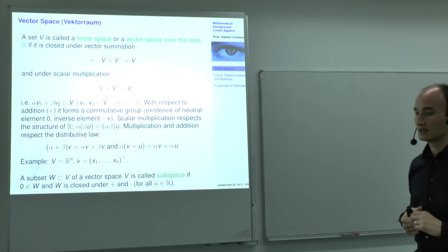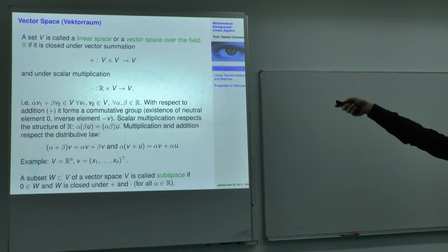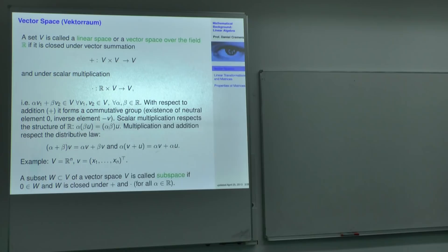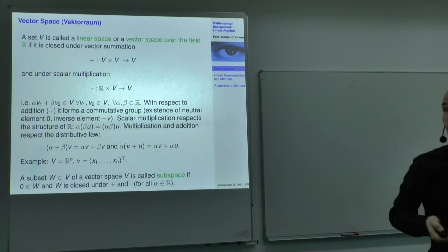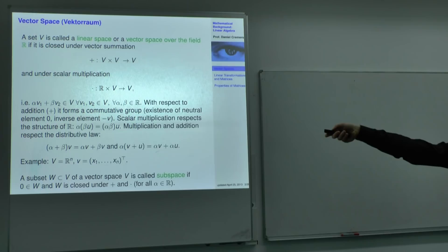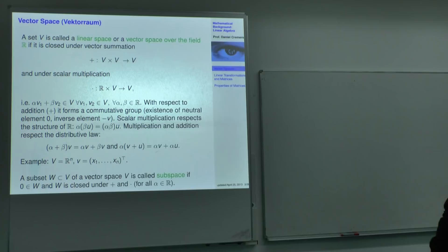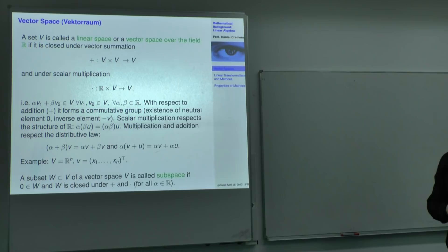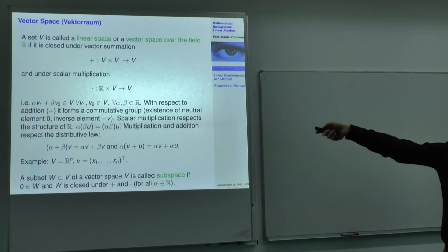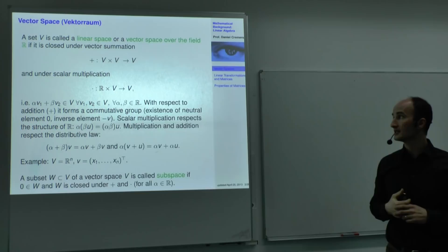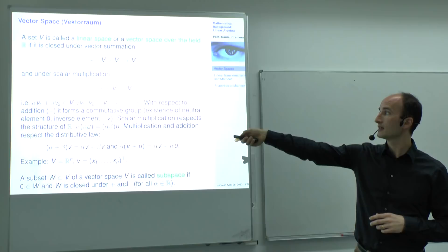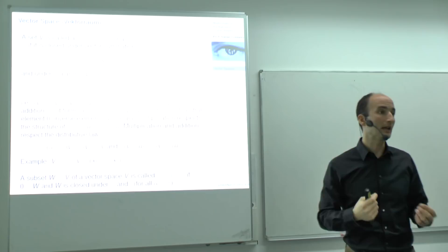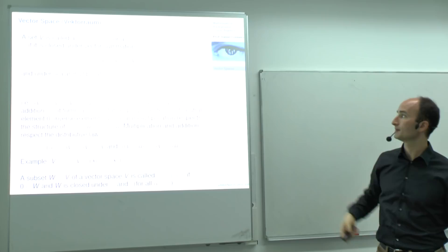A vector space is a set V — we call it a linear space or a vector space over a field R. It's called a vector space if it is closed under summation: you have elements in that space V, you can sum them and get a new vector. In addition you have another way to combine them, with real numbers from the underlying field R, and this is called scalar multiplication. You take a vector v and scale it with a scalar alpha. You can do summation and scalar multiplication and always remain in that vector space.